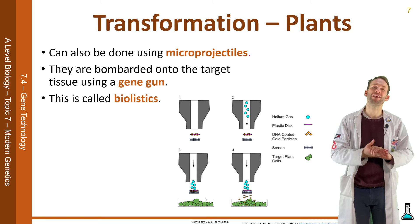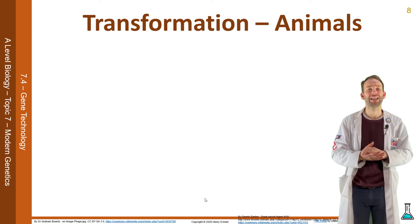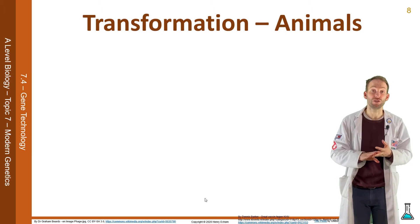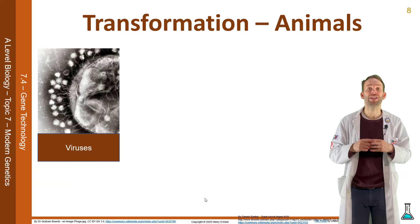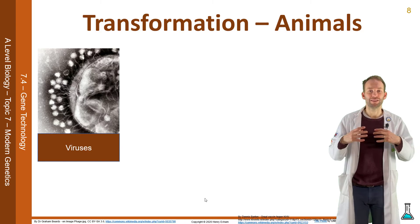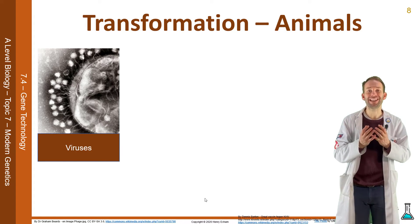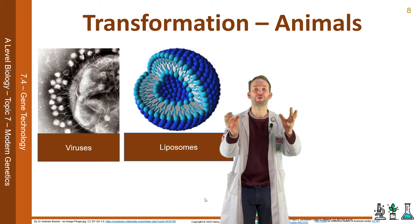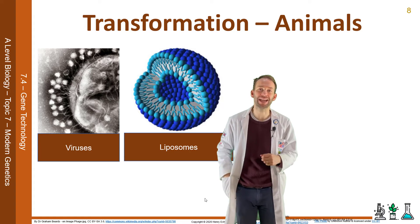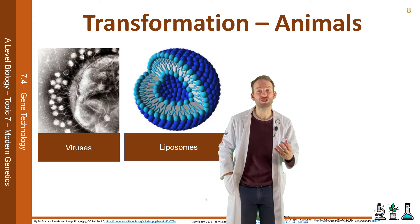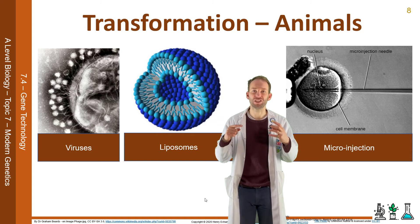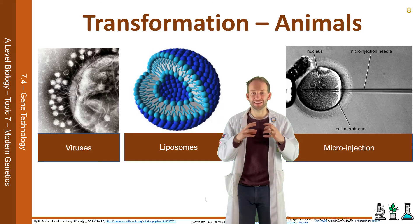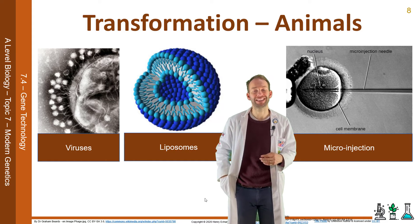Transforming animals is a little bit more difficult and complex. There are three methods used with varied success. First, viruses — these are engineered and then injected into the animal cells in vivo. Second, liposomes — these are lipid vesicles which can fuse with membranes and put the DNA into a cell in vivo. Third, microinjection — where DNA is injected with a specially engineered microinjection needle directly into the nucleus of a cell.